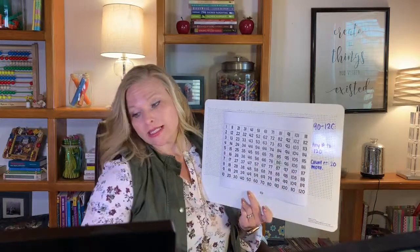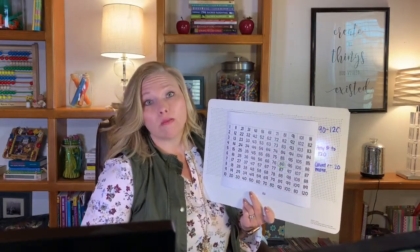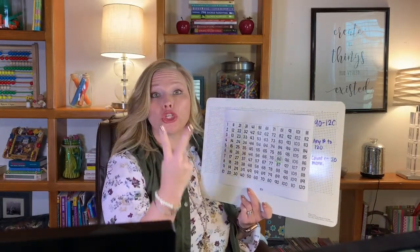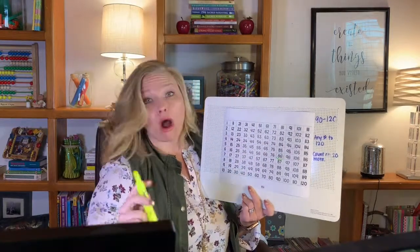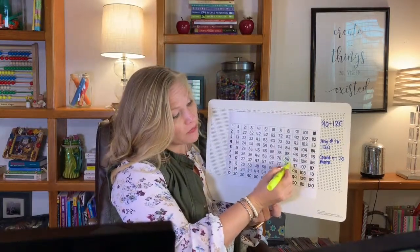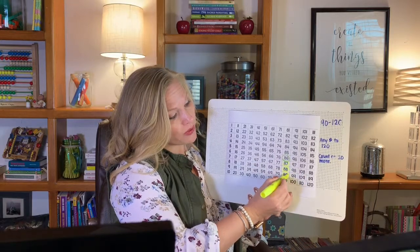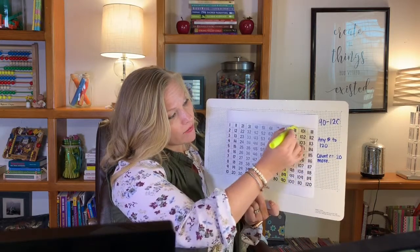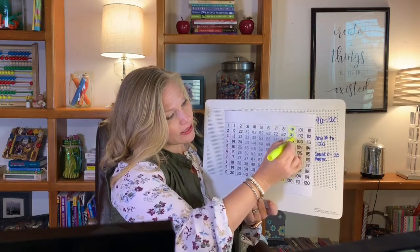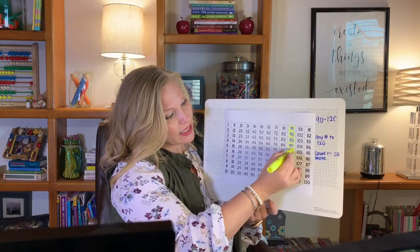Let's count 20 more. 20 is two tens. So let's count our first ten. Count with me. 1, 2, 3, 4, 5, 6, 7, 8, 9.